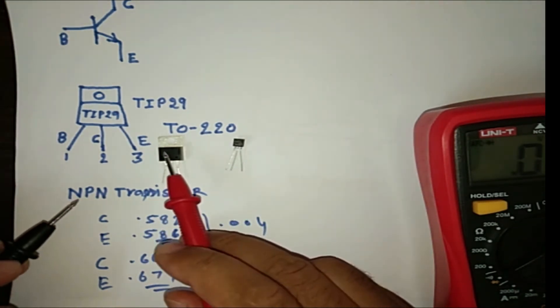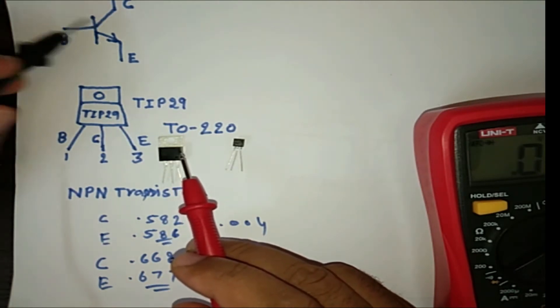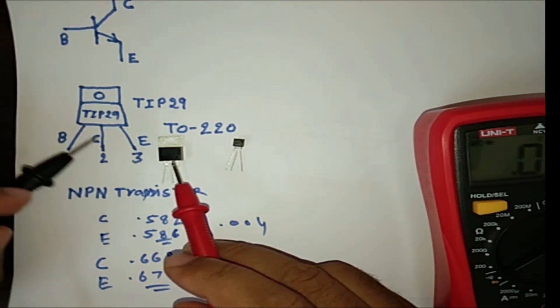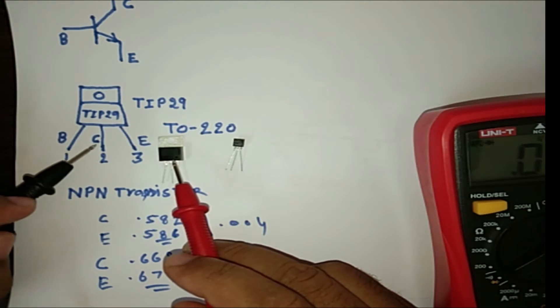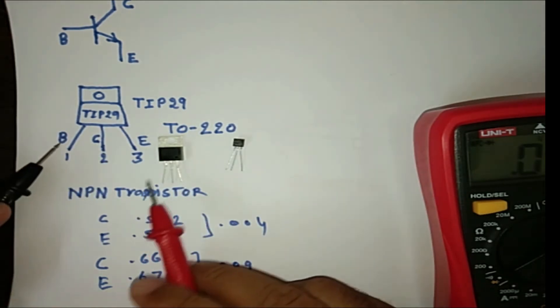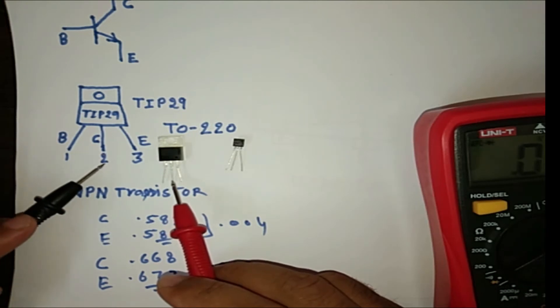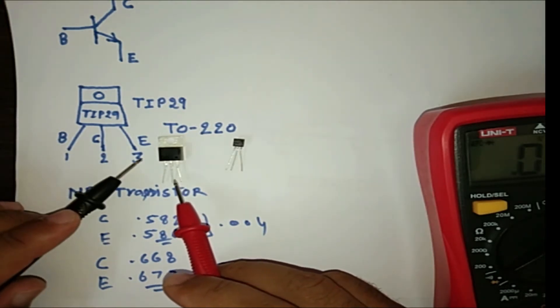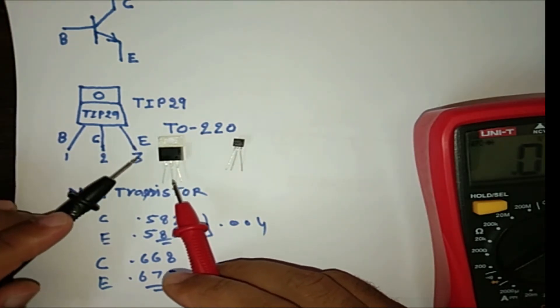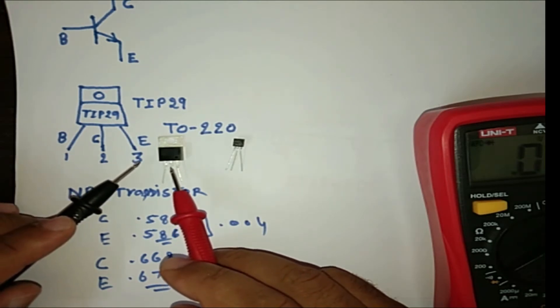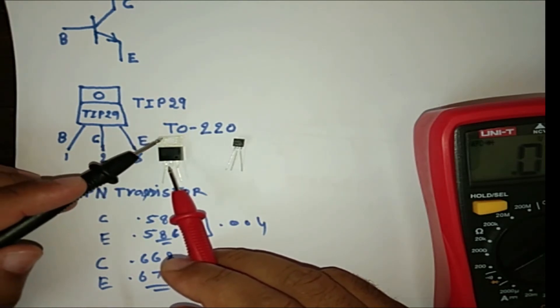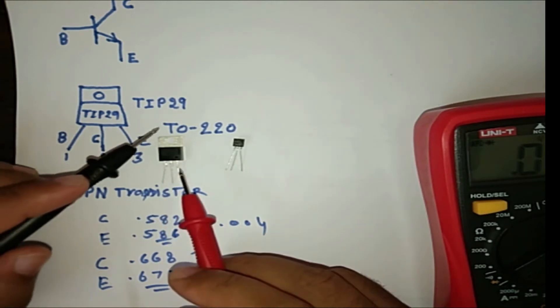So here, you can see here, this is transistor symbol and this is the pin description of this transistor. First pin is base, this pin. Middle pin is collector, pin number 2. And third pin is pin number 3, emitter. And pin number 2 is also connected with this body.